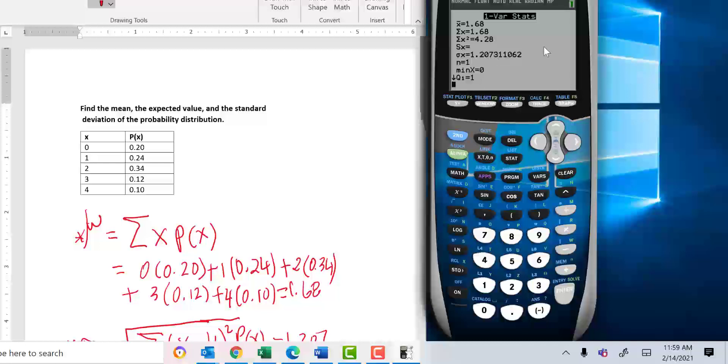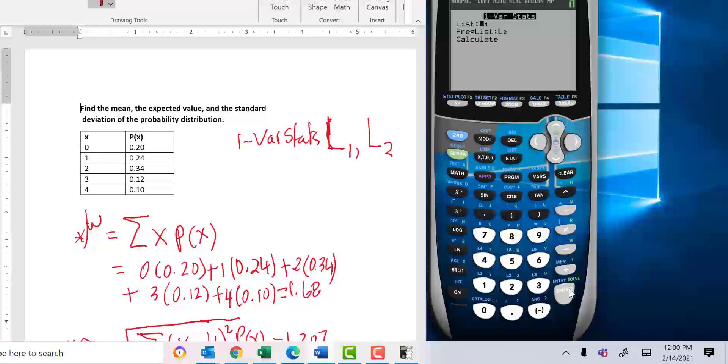Now, if you have an older calculator and you don't get the screen that we got right here, let me show you again. So, Stat, Calc. If you press one variable Statistics, you don't get this screen but you just get 1-Var Stats. You don't open parentheses. You just press the second and then number 1, L1, comma, and then you put L2 and that should give you the same results.